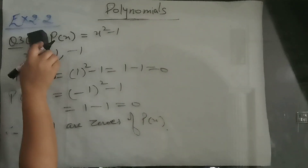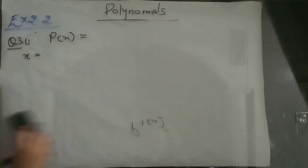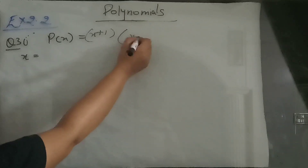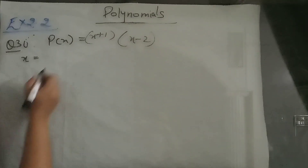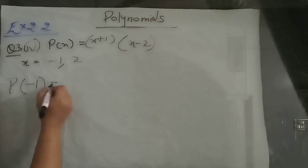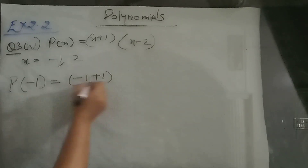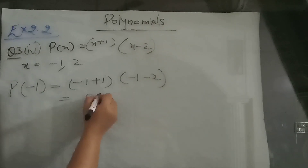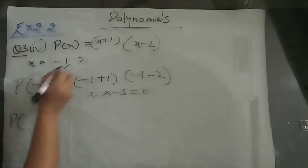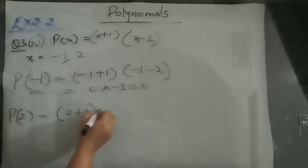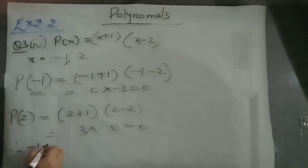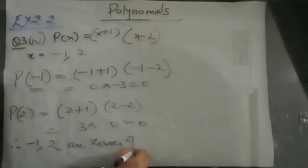Now the fourth part: p of x is x plus 1 into x minus 2, where x is equal to minus 1 and 2. Find p of minus 1: minus 1 plus 1 is 0, times minus 1 minus 2 gives 0 into minus 3, answer is 0 — so minus 1 is a zero. Now put 2 in place of x: 2 minus 2 is 0, 0 into something is 0. So both minus 1 and 2 are zeros of p(x).